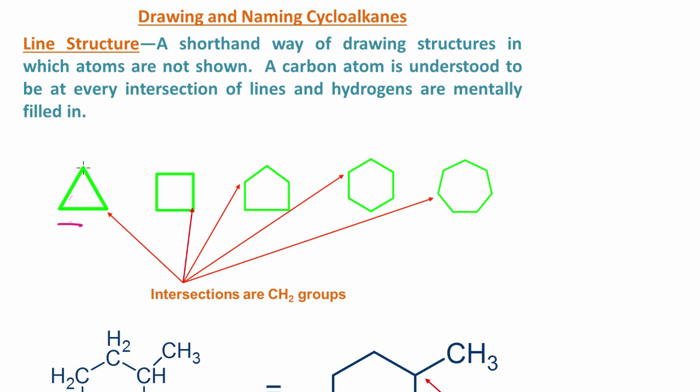The intersections represent carbons - here we have a carbon here, a carbon here, a carbon here. That's three carbons, cyclopropane. Each intersection corresponds to a CH2 group, so on each carbon you have two hydrogens.